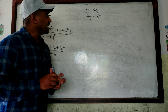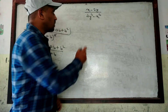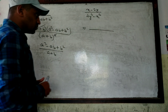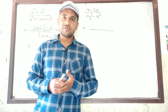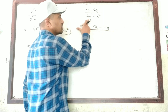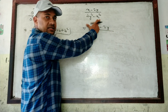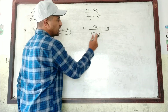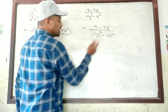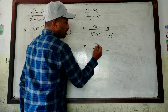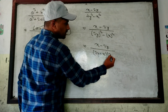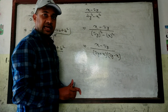Now look at this question: (x − 2y) divided by (4y² − x²). As I told you, if common, take common first; otherwise use formula or factorize. Here we cannot take common. For the denominator 4y² − x², we convert it: 4y² = (2y)², so it becomes (2y)² − x², which is in the form a² − b². Applying the formula: (2y+x)(2y−x).